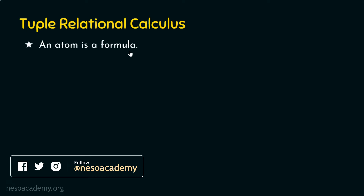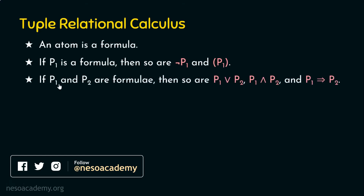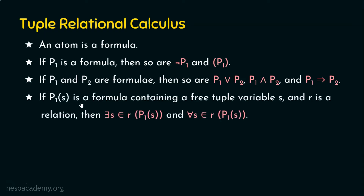Tuple relational calculus is built upon predicate calculus. If P1 is a formula, then so is the negation of P1. If P1 and P2 are formulae, then so are P1 or P2, P1 and P2, and P1 implies P2. A tuple variable is called a free tuple variable if it is not associated with any quantifier — whether existential or universal.